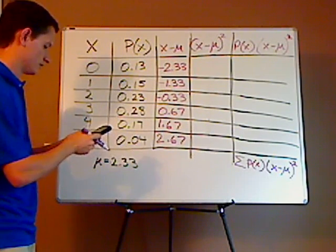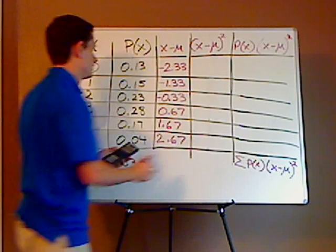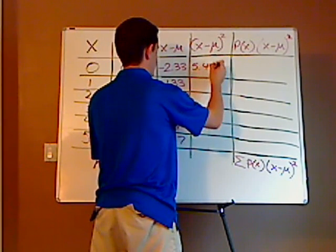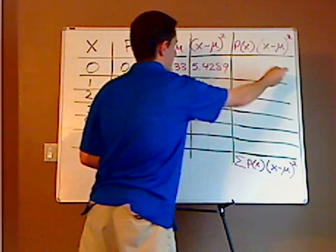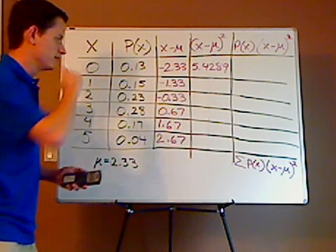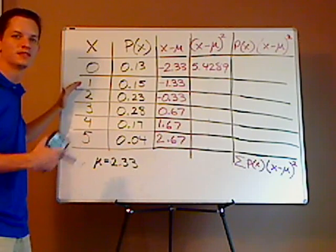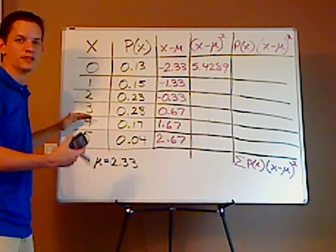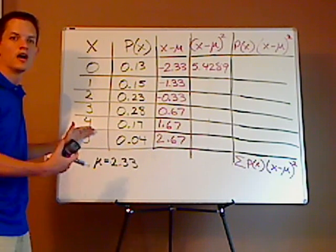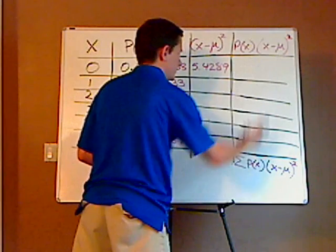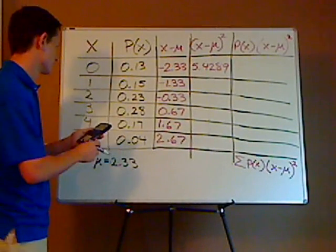Now I'm going to square each one. So negative 2.33 squared, that's going to give me 5.4289. I'm not going to round until I get here, and I'm going to use two decimal places because I'm going to be taking the square root of the variance, which gives me the standard deviation. And I need an extra decimal place. Since my discrete variables have no decimal place, I always go one more. And if I'm going to be calculating, I want to go an extra one so I know whether to round up or down.